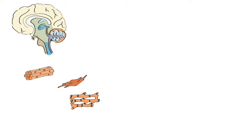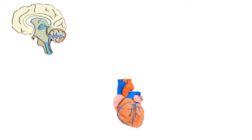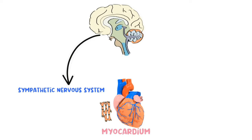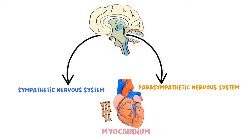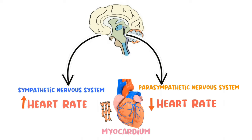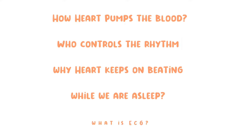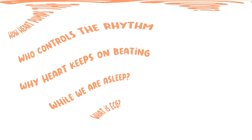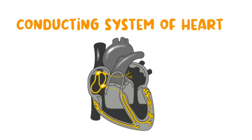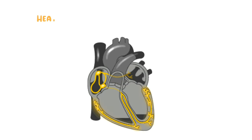This cycle continues throughout our life until death. Unlike skeletal muscles, the myocardium is not under voluntary control. Just like smooth muscles, the autonomic nervous system can only increase or decrease myocardial activity. If the brain can only increase or decrease the heart rate, then who gives the signal to the myocardium, who controls the rhythm, and what controls our heart when we are asleep? The answer is the conducting system of the heart.